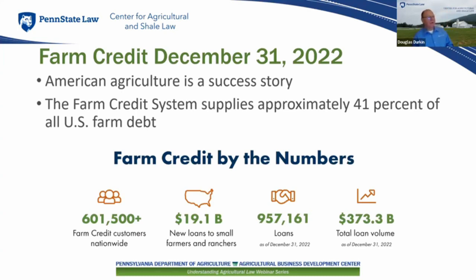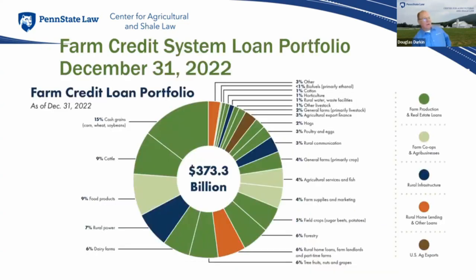Farm Credit as of December 31, 2022 — this is for the entire farm credit system nationwide. It's an American success story. The system holds 41% of all U.S. farm debt. We had 601,500-plus farm credit customers nationwide, with $19.1 billion in new loans to small farmers and ranchers, and 957,161 loans at the end of the year for a total volume of $373.1 billion. The farm credit system's loan portfolio is divided amongst various agricultural and rural America sectors as depicted in the slide.